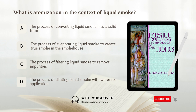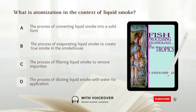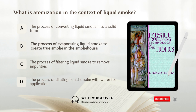What is atomization in the context of liquid smoke? A. The process of converting liquid smoke into a solid form. B. The process of evaporating liquid smoke to create true smoke in the smokehouse. C. The process of filtering liquid smoke to remove impurities. D. The process of diluting liquid smoke with water for application. Answer: B. The process of evaporating liquid smoke to create true smoke in the smokehouse.